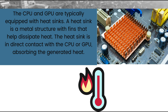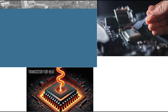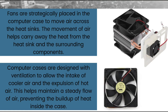The CPU and GPU are typically equipped with a heat sink — a metal structure with fins that help dissipate heat. The heat sink is in direct contact with the CPU or GPU, absorbing the heat generated by them. Thermal paste, also called thermal compound, is often applied between the surface of the CPU or GPU and the heat sink. This paste enhances thermal conductivity, ensuring efficient heat transfer from the component to the heat sink.